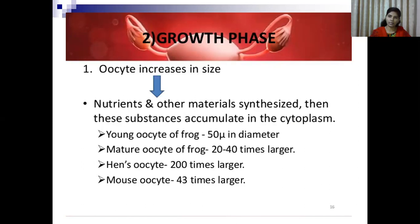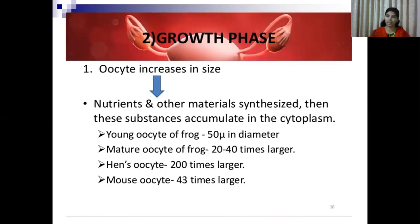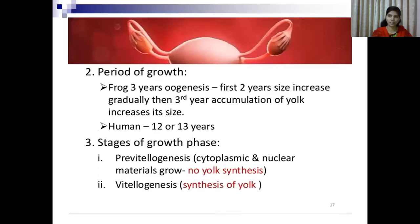The size increases because during this phase nutrients and other materials start to be synthesized and then accumulate in the cytoplasm, causing the cell to grow. For example, in frogs, young oocytes before the growth phase are 50 microns in diameter, but after completing the growth phase they become 20 to 40 times larger. In hen eggs, the increase is more than 200 times larger after completion of the growth phase. In mice, the oocyte is 43 times larger after the growth phase.